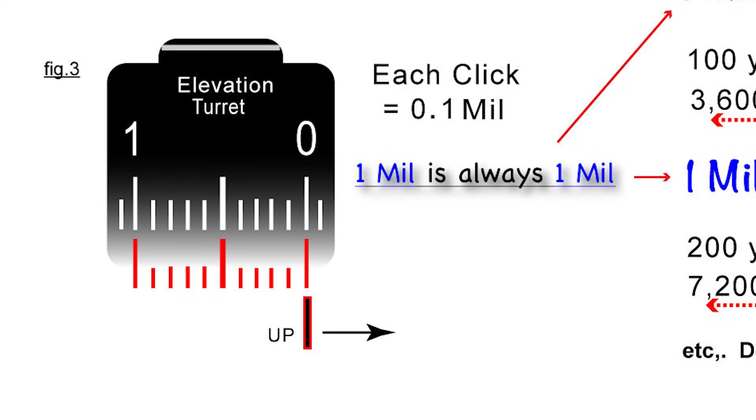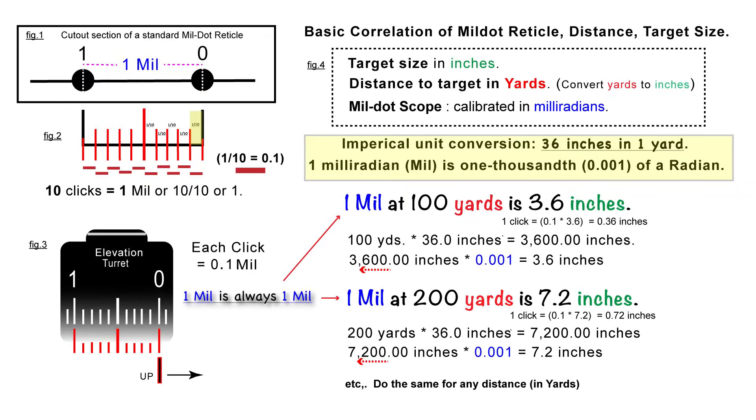Now let's take a look at a graph and put it all together. On the right hand side, you have a basic correlation of the mil dot reticle distance to your target and the target size. In the yellow square there, I have broken it down because we are shooting in yards. Our distance to our target is in yards, and then the size of our target is in inches. So the empirical unit conversion is 36 inches in one yard.